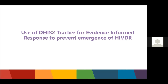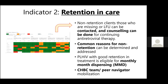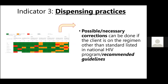Now I will present how we use DHIS2 tracker for evidence-informed response to prevent emergence of HIV drug resistance. For indicator one — on-time pill pickup — if a site is not performing well, the site can contact the PLHIV immediately, send a reminder SMS built within the tracker information system, or coordinate with community home-based care and peer navigator teams to ensure clients have access to medicines on time. A similar approach is used for retention in care; if a PLHIV is doing well in retention, they become eligible for multi-month dispensing and do not have to travel every month. For dispensing practices, health workers at federal and province level can easily identify sites with poor practices and guide them.